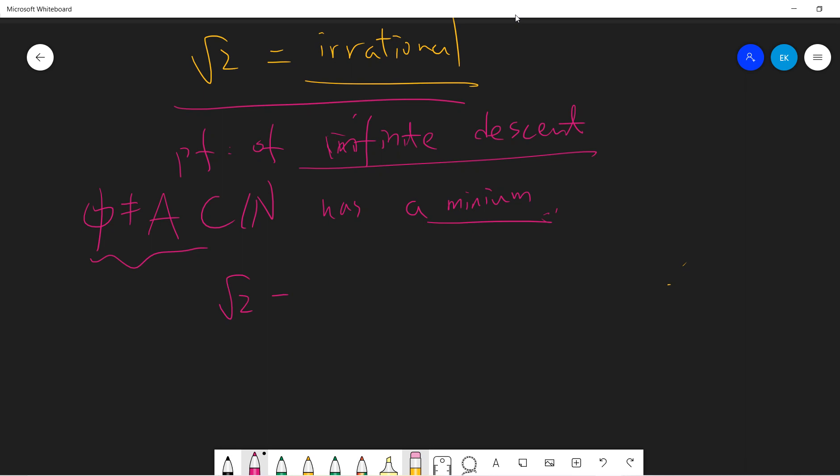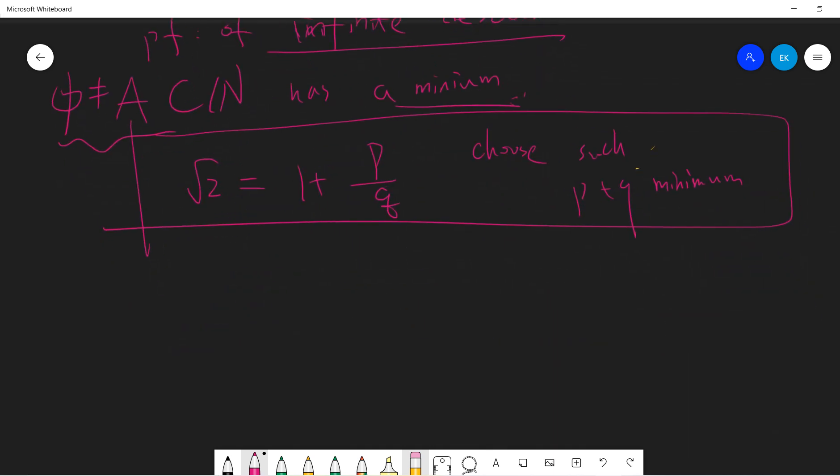So the idea is that let's write square root of 2 as 1 plus p divided by q, and I choose such that p plus q is a minimum. Let A be a set such that square root of 2 can be written as 1 plus p divided by q. And I choose this p and q such that this p plus q is a minimum of the set A.